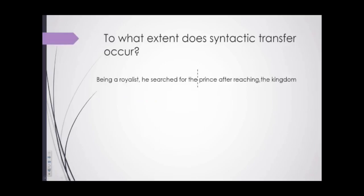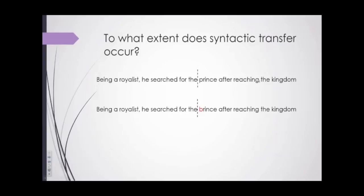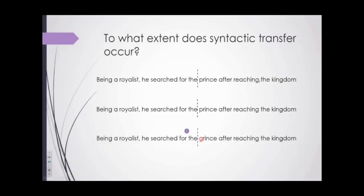We used the boundary paradigm in eye-tracking. Participants would read a sentence like 'seeing a royalist, he searched for the prince after reaching the kingdom' — this line is the boundary. We included sentences with a mutated word as a parafoveal preview. So as they're reading, in the parafovea it says 'brince,' and they process 'brince' in the parafovea, but upon fixating on the word it changes back to 'prince.' We also had a condition where an aberrant non-word appears in the parafovea — 'grince' — which changes to 'prince' upon fixation. We again had mutation context and no-mutation context sentences.